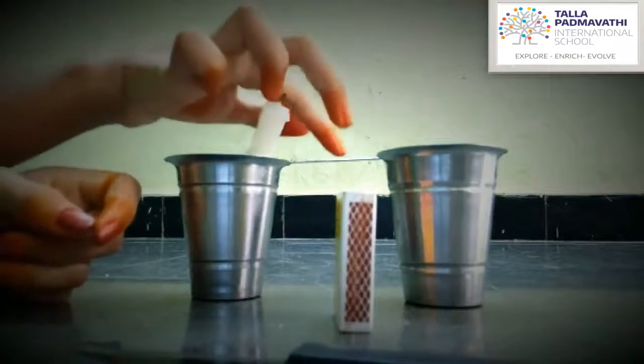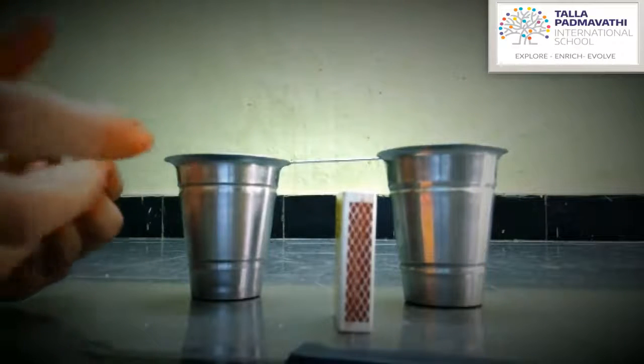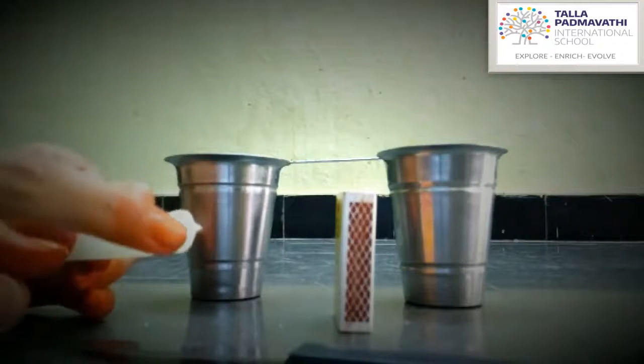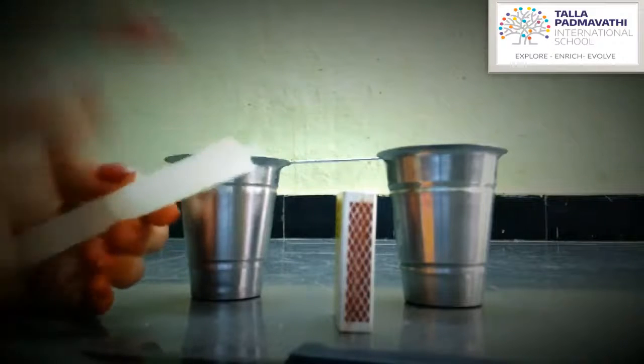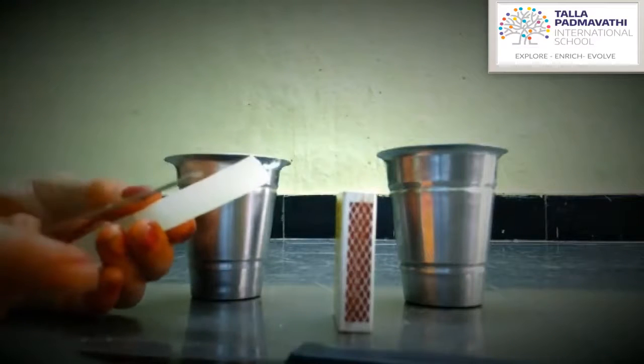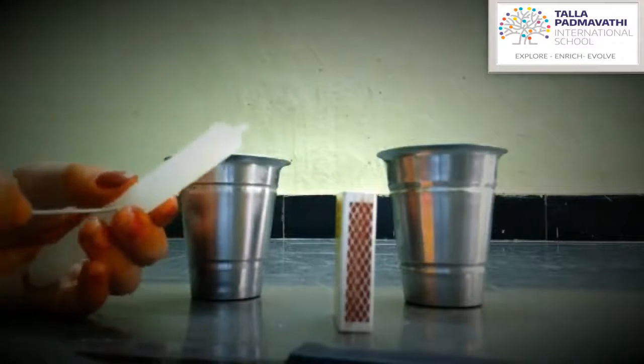First of all, we have to take the candle and remove the thread from two sides. Then we have to insert this needle exactly in the middle of the candle.